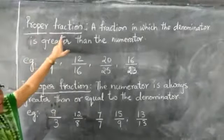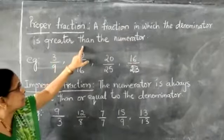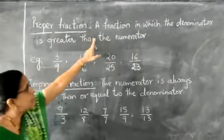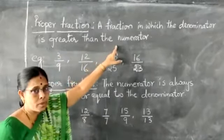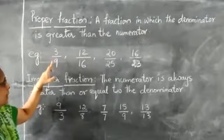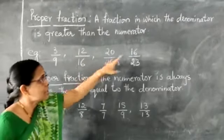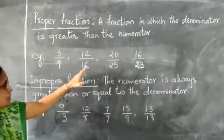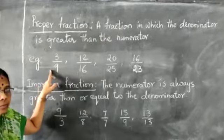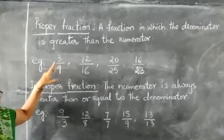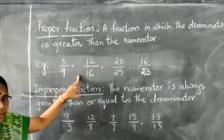See now, proper fraction. A fraction in which the denominator is greater than the numerator. For example: 3/9, 12/16, 20/23, 16/25. In all these fractions, the numerators are less than the denominator. Such type of fractions are called proper fractions.